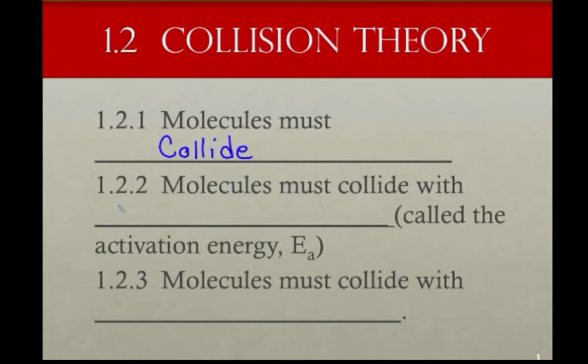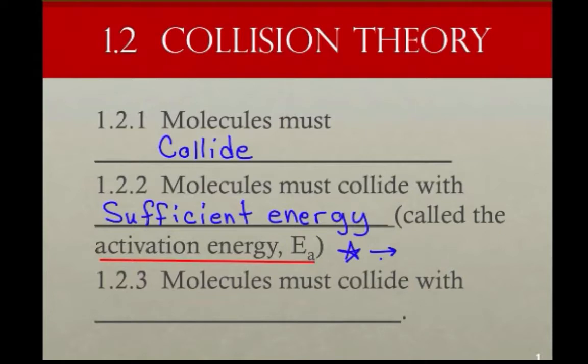The second is that molecules must collide with sufficient energy. That's, we're going to be talking, that's kind of the spark that has to get it going in a reaction. Sufficient energy. Now for some reactions, that spark that gets it going is all it needs. And then the energy from the reaction perpetuates the reaction. Other times, you have to continually provide energy. Now that sufficient energy is called the activation energy. E sub A is the symbol used there. And we will be using the units joules or kilojoules on a regular basis.